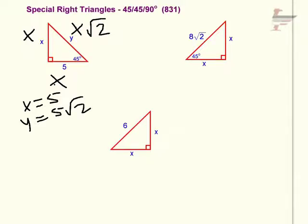Now for the second example in the upper right X and X are already labeled the hypotenuse would be labeled with X root 2 so you can see that X is equal to 8 and so if you're given something in the form of X and X and X root 2 it's quite simple to do a 45 45 degree triangle.